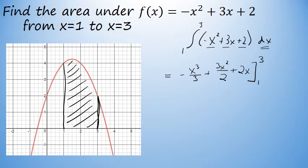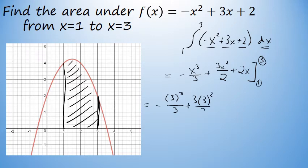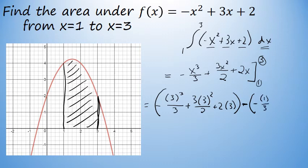We are going to be evaluating this integral from x equals 1 to x equals 3. After finding the integral, we'll substitute a 3 for x and subtract the result of substituting a 1 for x. So this becomes negative 3 to the third over 3, plus 3 times 3 squared over 2, plus 2 times 3. And from this expression, I will subtract the result of substituting a 1 for x, the lower bound, which will be negative 1 to the third over 3, plus 3 times 1 squared over 2, plus 2 times 1.